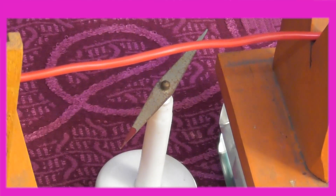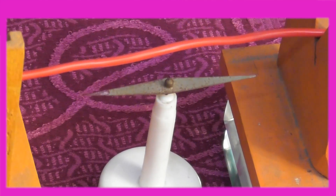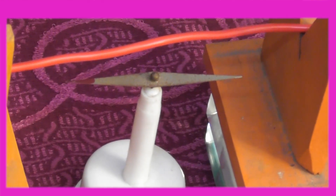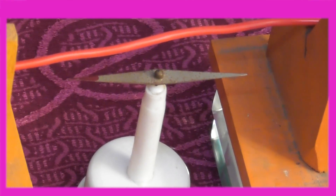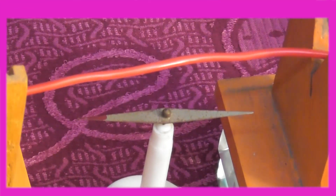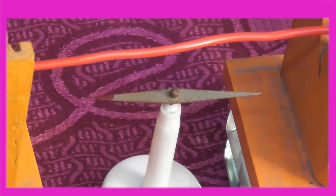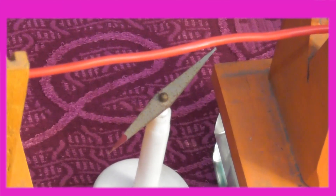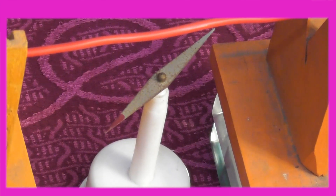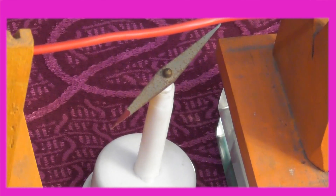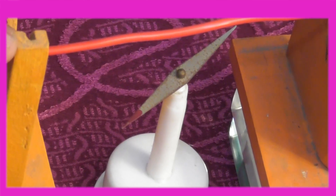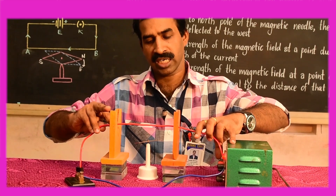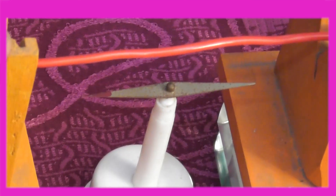I will switch off the current so that it comes back to its original position and aligns in the north-south direction. Now if I increase the distance, you may check the deflection. The angle of deflection of the magnetic needle in this case is less compared to the previous one. As I switch off, the magnetic needle comes to rest in the north-south direction.